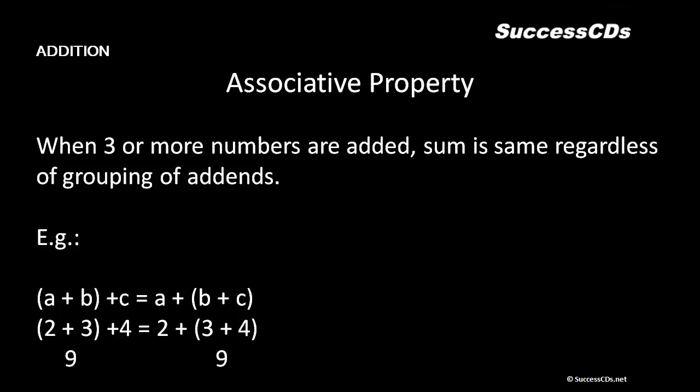The next property is the associative property. When three or more numbers are added, the sum is the same regardless of the grouping of addends. So if we are adding three or more numbers, you can first add any two numbers and then the result will be added to the third number.